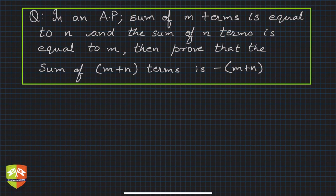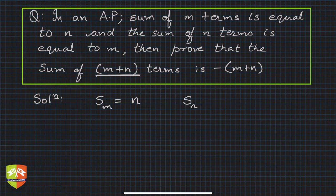In this question it's given that in an AP, sum of m terms is equal to n and sum of n terms is equal to m. Then we have to prove that sum of m plus n terms is minus m plus n. So let's solve this problem. What is given? Let's first write that. It's given S_m, so first m terms is n, and S_n is equal to m, and we have to find out S_{m+n}, right?